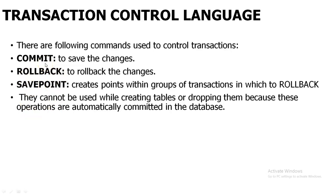Commit means that whatever transaction we are doing, if you give commit, it means you are permanently saving the changes or saving the transaction. Rollback means whenever you give rollback in your transaction, it will go back to the last commit point, that is the last time where you saved the transaction. Savepoint, instead of commit, wherever you give a savepoint, it is a kind of temporary saving. Whenever you give a savepoint, you can rollback to that particular savepoint.